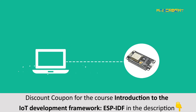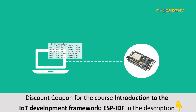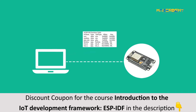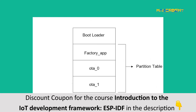A single flash on ESP32 can upload multiple apps along with various kinds of data. Therefore, a partition table is flashed while flashing code on the ESP32 board. To enable OTA functionality, we need to do three app partitions in the partition table: Factory, OTA_0, and OTA_1.